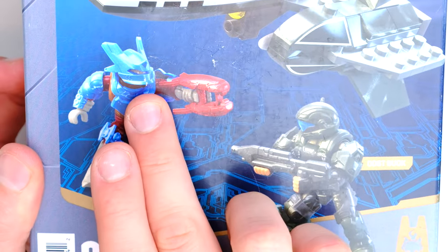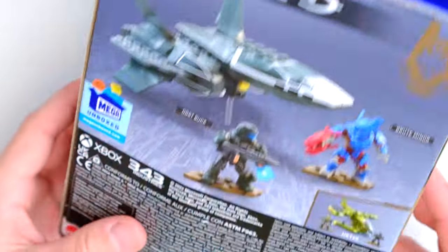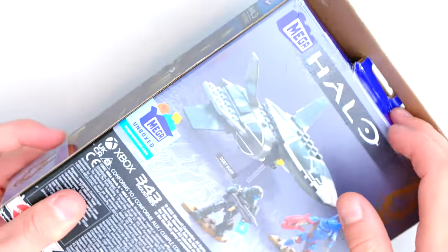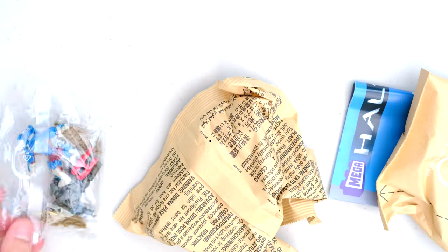We got Buck, we got a Brute that is like a captain but he's labeled as a Brute Miner, which I don't really get but never mind. And this Wombat, we've only ever had one Wombat before and it came with an ODST Rookie, so it makes sense that this one comes with an ODST Buck.